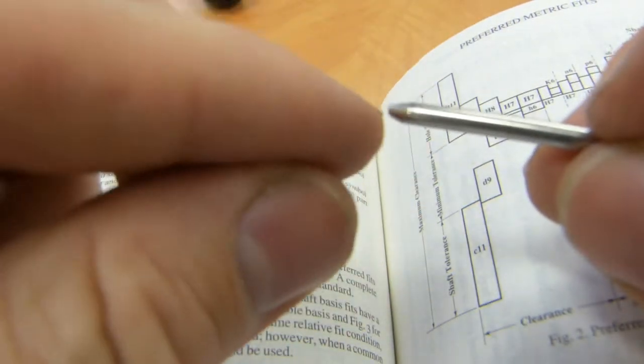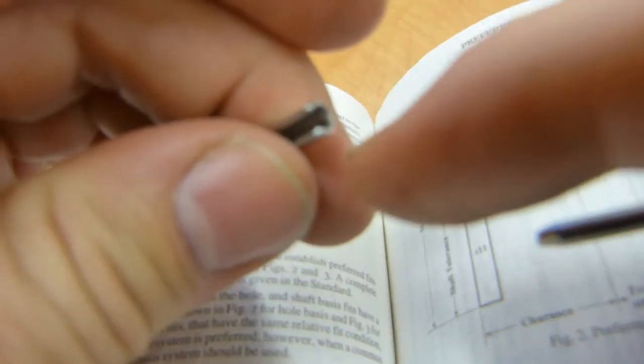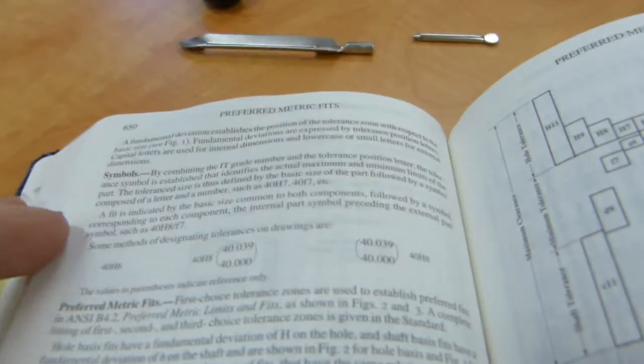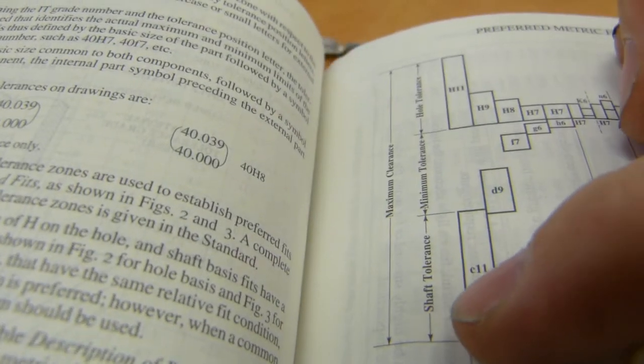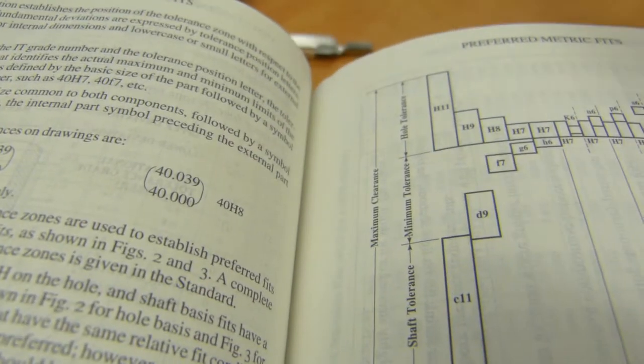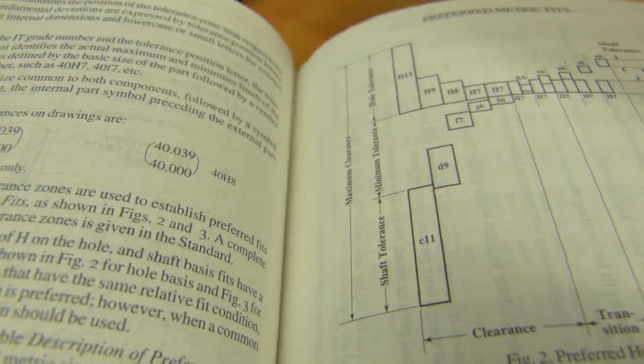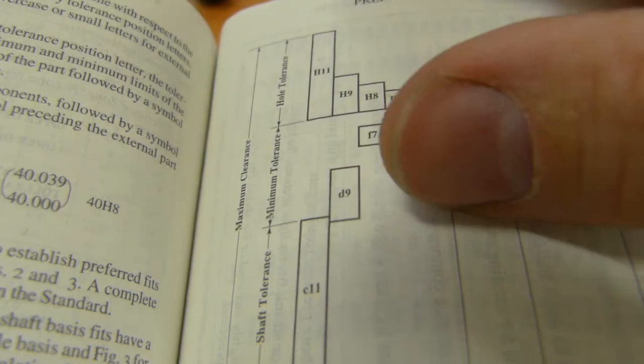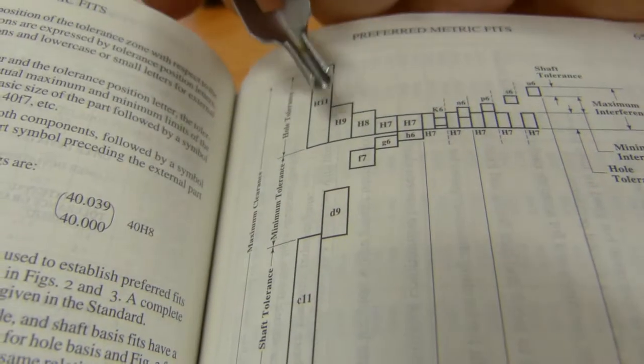It says metric fits. In this metric fits you see the dimensional difference between these two parts. I'm going to call this one a pin and this one is going to be a hole. Even though it's not technically a hole, it's a U-shaped channel, but we'll go with hole. These two parts are represented here in the picture. This one says shaft, we're going to go with that, that's the pin. And this one says hole, hole tolerance.